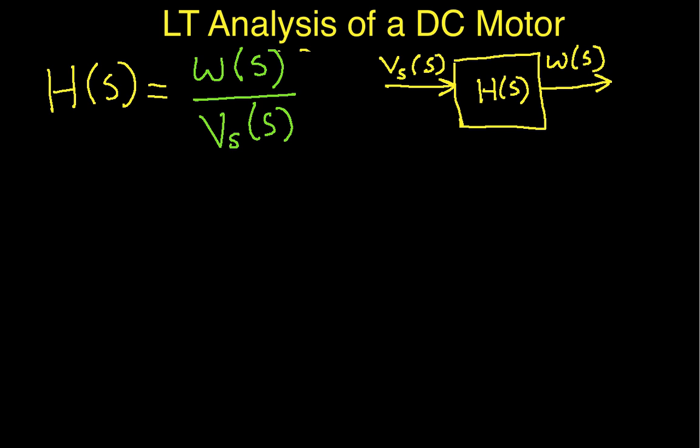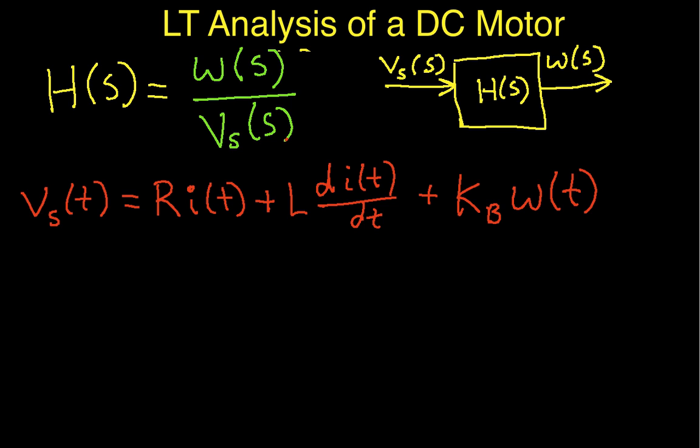Now the differential equations that relate these two are the following. You'll remember differential equations are in the time domain. So v sub s which again is the source voltage applied to the motor is equal to R times i(t) where i is the current through the motor and R is the motor's resistance plus L di/dt. So L is the motor's inductance plus kb which is a constant that tells us how large the back emf is going to be times the radial velocity of the load.